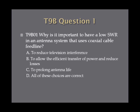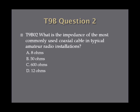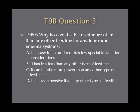Question 1. Why is it important to have a low SWR in an antenna system that uses coaxial cable feed line? A. To reduce television interference. B. To allow the efficient transfer of power and reduce losses. C. To prolong antenna life. Or D. All of these choices are correct. Question 2. What is the impedance of the most commonly used coaxial cable in typical amateur radio installations? A. 8 ohms. B. 50 ohms. C. 600 ohms. Or D. 12 ohms.